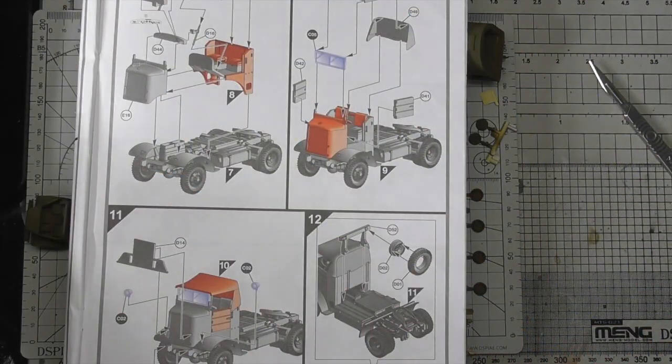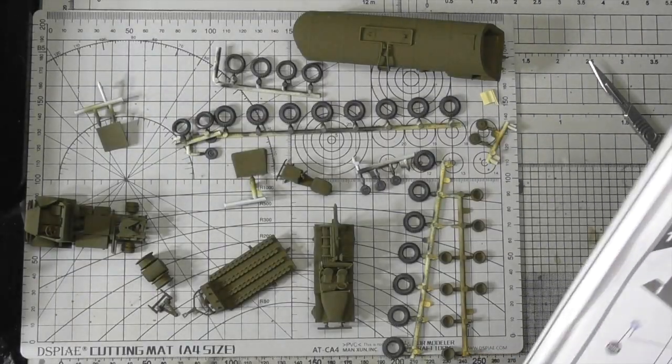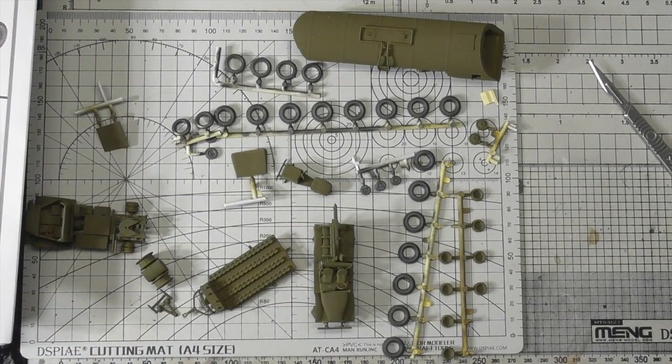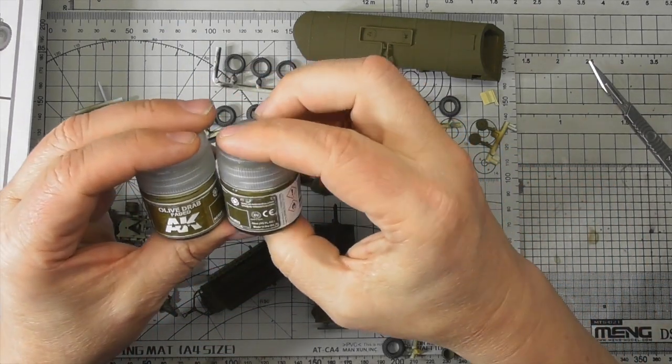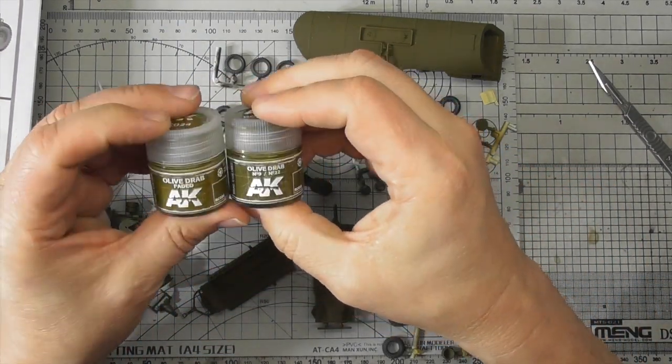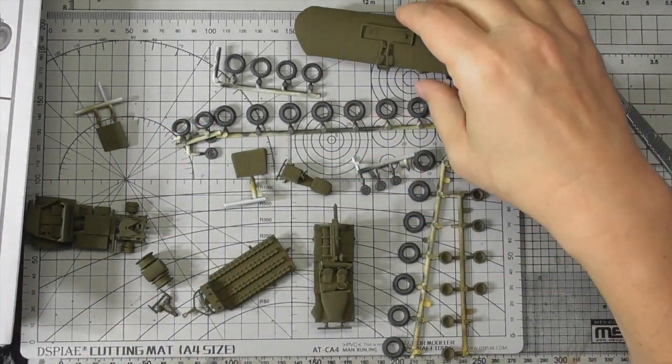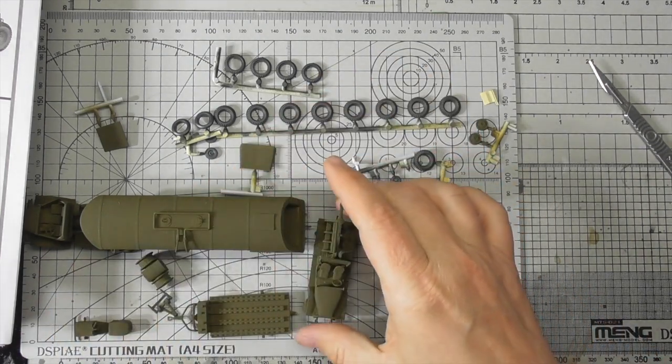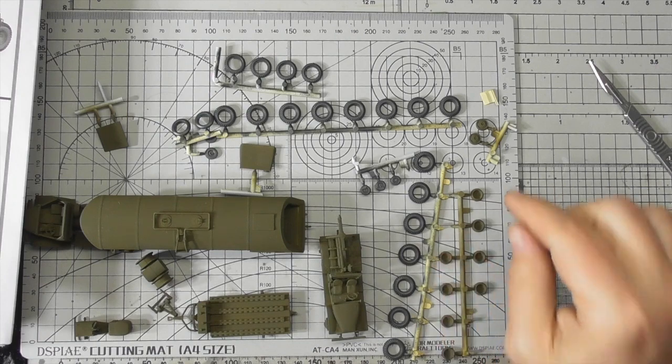So one thing I did while we were away was I painted the support vehicles olive drab. These two AK real colors right here, same ones I used on the aircraft, only didn't fade them as much. So we've got the tanker, the bomb cart, the wagon, the wrecker, the tires, and the hubs.